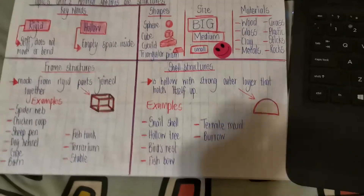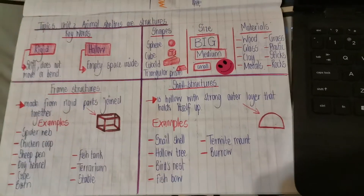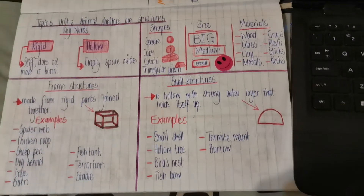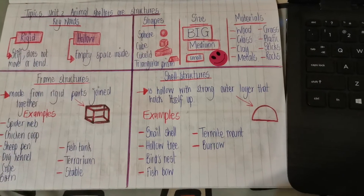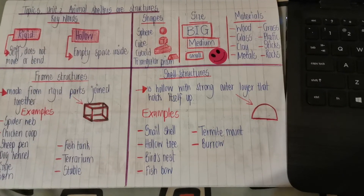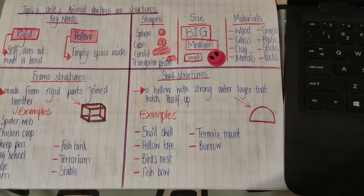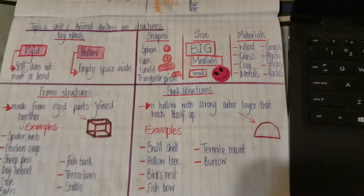This is your summary for Topic 5, Unit 2 — Animal Shelters and Structures. Thank you.